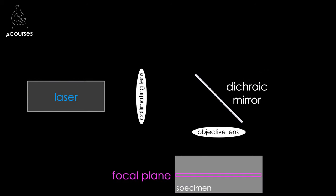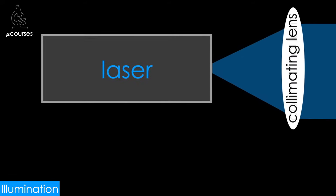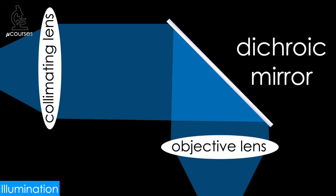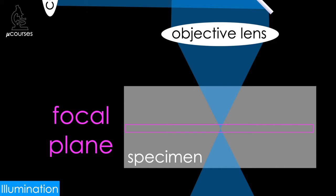Let's look at a diagram of a simplified confocal microscope to see how focused illumination can be achieved, looking first at just the illumination light path. In confocal microscopes, lasers are most commonly used as a source of photons to illuminate the sample. The light from the laser passes through a collimating lens, which forms a beam in which all the light waves are traveling in the same direction. The light is then reflected by a dichroic mirror to the objective lens, which focuses the collimated beam into a point source at the focal plane. For more on how lenses form collimated beams or focus light, check out the microscope alignment for optimal image quality microcourse.